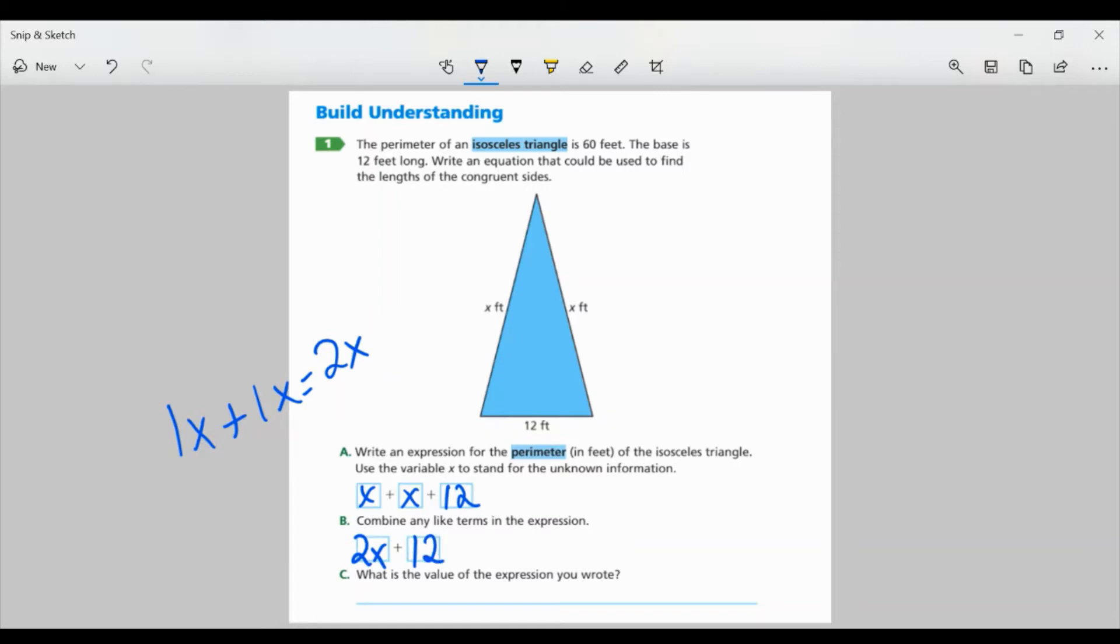What is the value of the expression you wrote? Well, 2X plus 12 is the perimeter, right? That's me adding up all my sides. But it did tell me the perimeter is 60 feet. So I know the value of this expression is 60 feet.